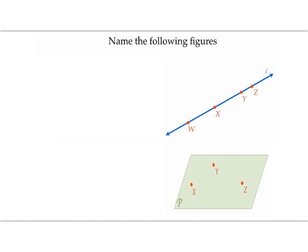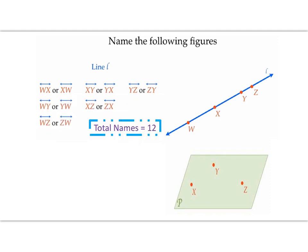Let's practice naming figures. We have four points on a line and a lowercase scripted letter. You can choose any two points or the scripted letter to name it. Using the scripted letter is one name. Points W and X give another name; rearranging gives XW. You could pick X and Y, or Y and Z, and rearrange each. In total, with any two points plus rearrangements, we have 12 different names. It's very important not to forget the line symbol with arrows above the two letters — if the arrows are missing, you're naming something completely different.